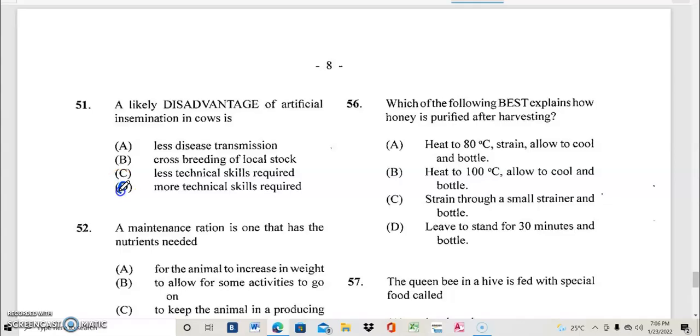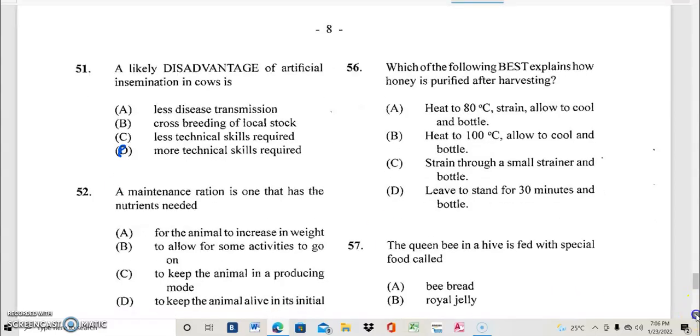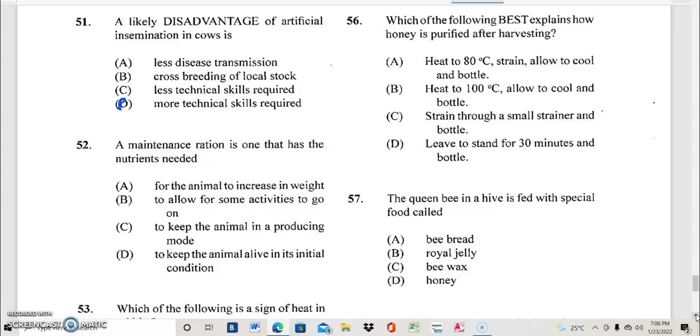Question 52. A maintenance ration is one that has the nutrients needed. Let me hear your answer for question 52. And the best possible answer for question 52 is D, needed to keep the animal alive in its initial condition.